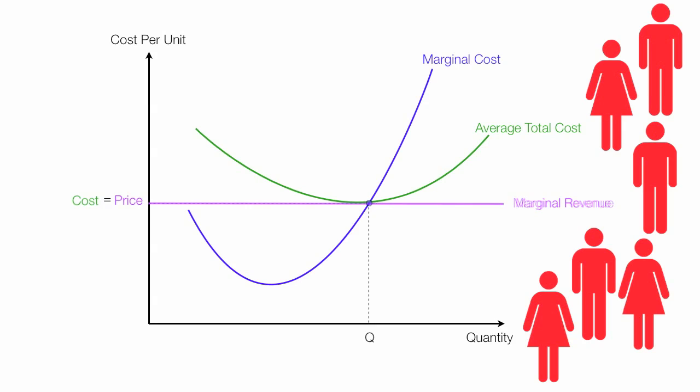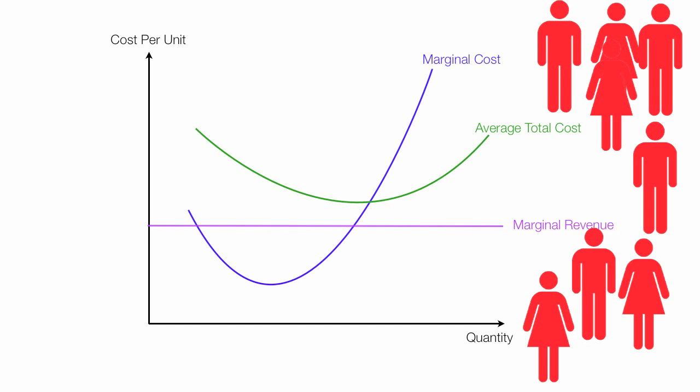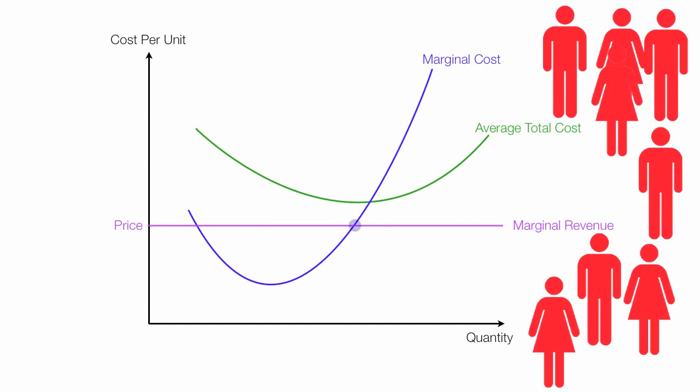And the individual supplier reduces quantity. With this new quantity, that quantity there, price is the purple line. And also, cost is the green line there, and cost and price are the same. Economic profits equals zero. More suppliers may actually enter the market as well at this point in time. They didn't get the memo. The prices are falling.